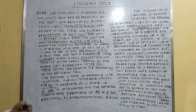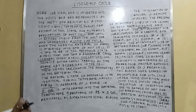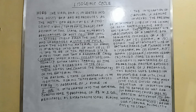Bacterial cells that contain only their own DNA have one set of properties. But when the bacterial cell's DNA is combined with the viral DNA, some of the properties change in that situation.